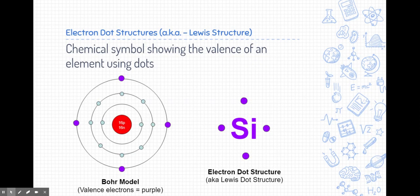We often symbolize these valence electrons using things called electron dot structures. They're also called Lewis dot structures.